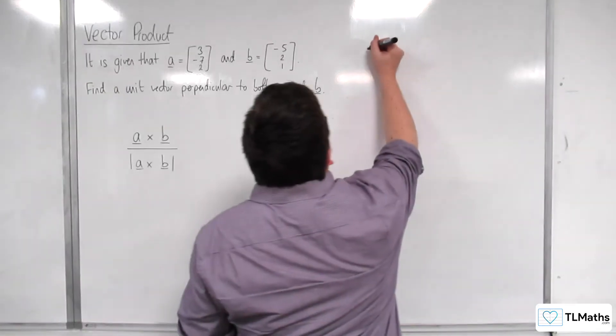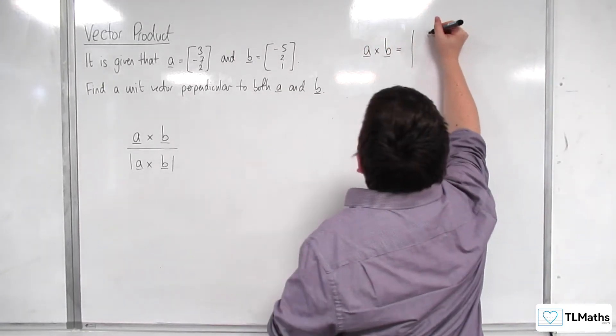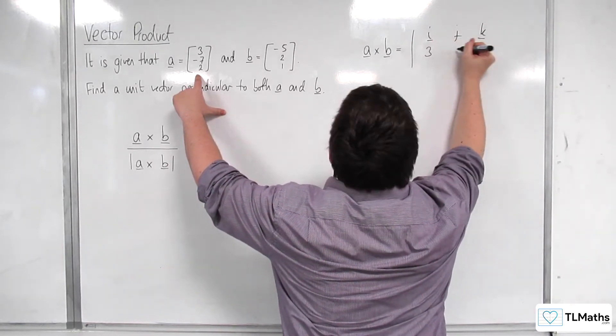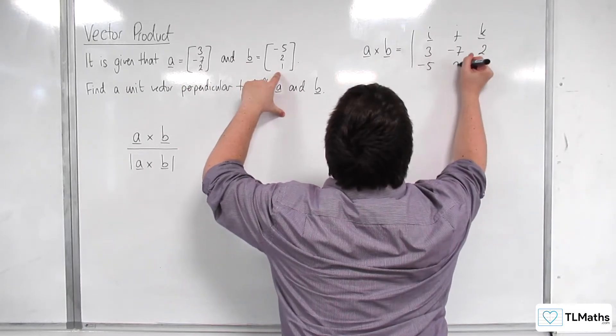So what we're going to need is a cross b, which is the determinant of i, j, k, 3, -7, 2, -5, 2, 1.